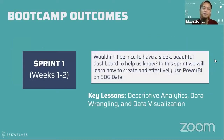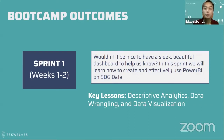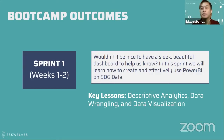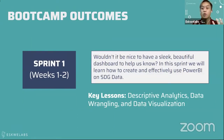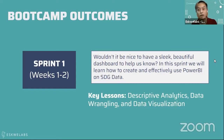For Sprint 1, as mentioned, sprints are split into two weeks. For our first output, we will be focusing on using Power BI, mainly on the data of SDGs — looking at specific indicators to see how they are currently doing. Key lessons tackled for this sprint include descriptive analytics, which is the baseline content of a dashboard, data wrangling with Power BI, and data visualization. We'll be introduced to the steps of how to do analytics and put it in the context of Power BI.